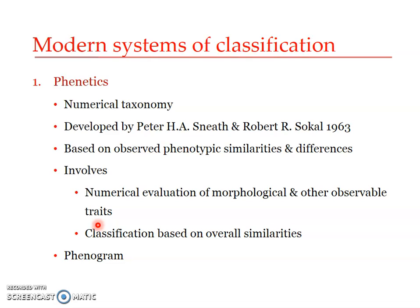The first system is phonetics, otherwise known as phonetic classification, phonetic taxonomy, or more commonly referred to as numerical taxonomy. It was developed by Peter H.A. Smeet and Robert R. Sokol in 1963. Robert Sokol was an Austrian-American biostatistician and entomologist — one who studies insects. Peter H.A. Smeet was a microbiologist. Both came up with the book 'On Principles of Numerical Taxonomy' in 1963, when numerical taxonomy was formally introduced. However, this method can be traced back to 1763 and Adanson, so some biologists refer to present-day phonetics as Neo-Adanson.